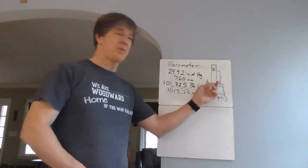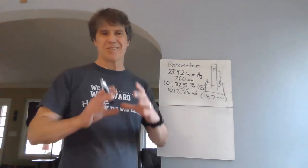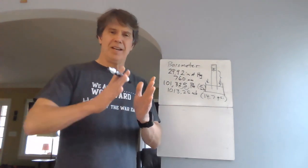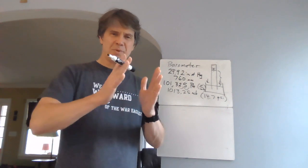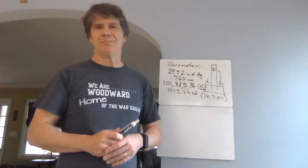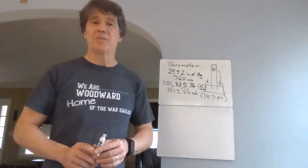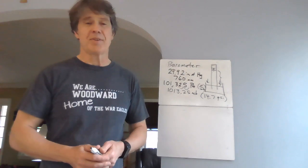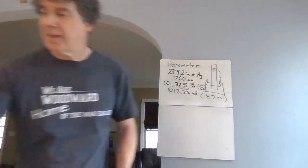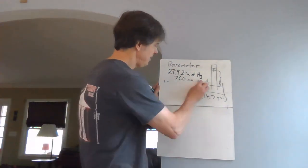Meanwhile, there are other kinds of barometers. There are aneroid barometers — basically a can with a vacuum in it, where the can depresses and is hooked up to a spring-loaded dial — those are mechanical ones. There are also electronic ones of various kinds. So there are a lot of technologically different ways to measure air pressure.